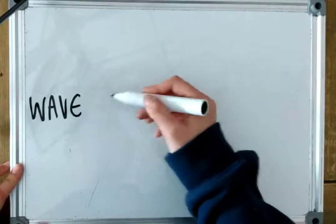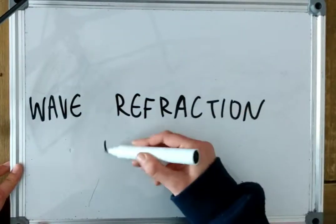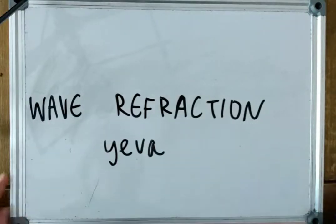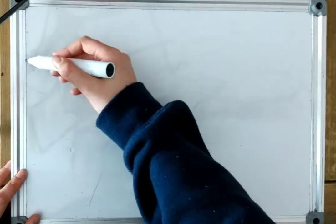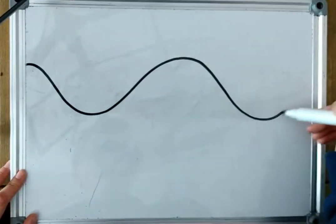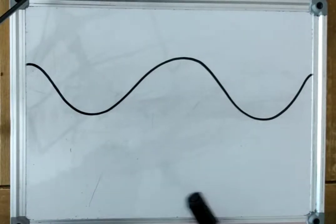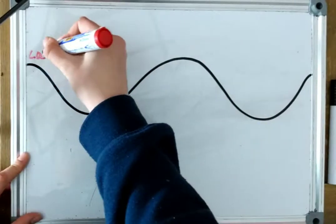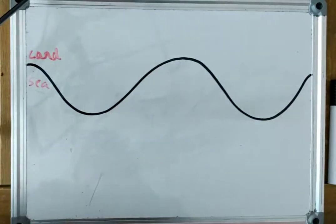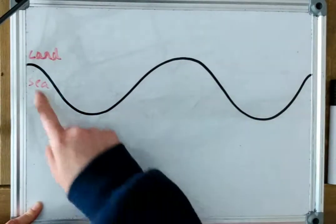Hey guys, welcome to episode 2 of Geography 101 for A-Level Geography. Today we're going to be doing wave refraction. So here I'm just drawing a coastline — the bit above is the land and the bit below is the sea. So here we can see two headlands and three bays.